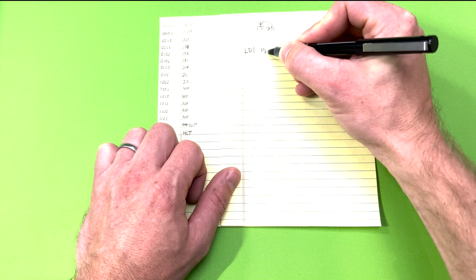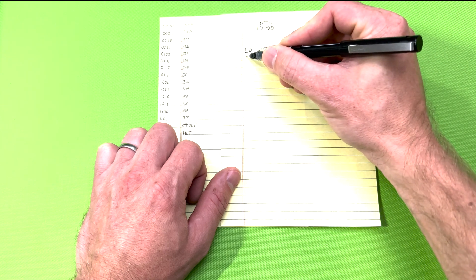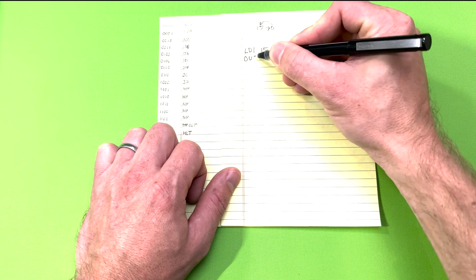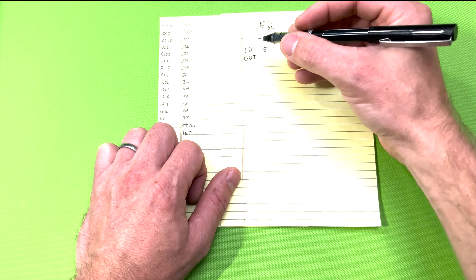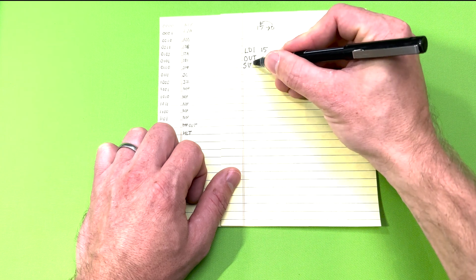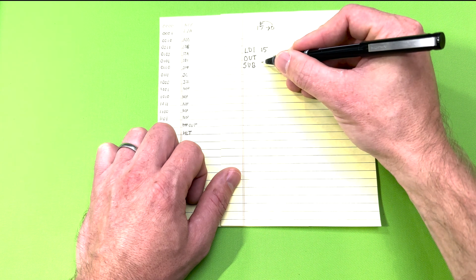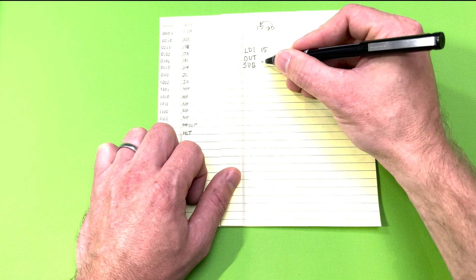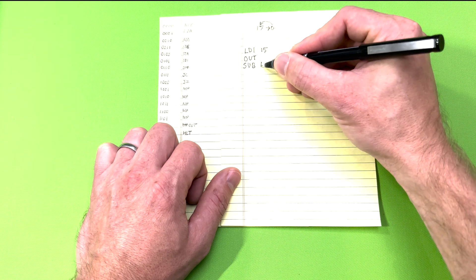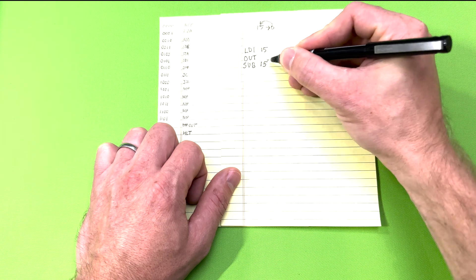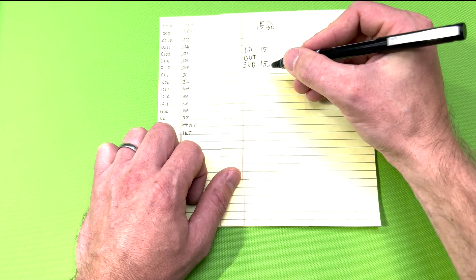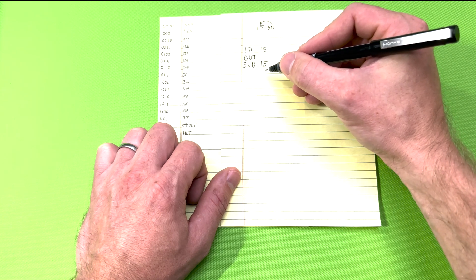What we need to do next is to subtract 1 from the 15 that we just added. We do have the SUB instruction but the instruction requires a RAM location where the value that is being subtracted is stored. So let's use the RAM location 15 which is the last RAM location where we will have the value of 1 stored.